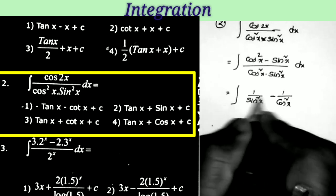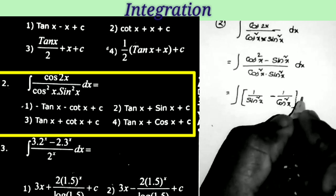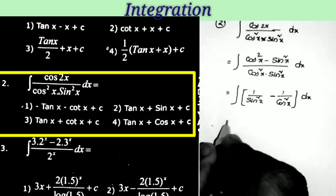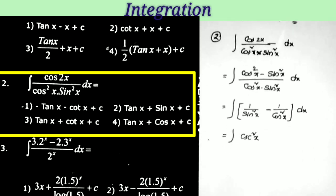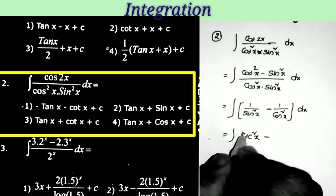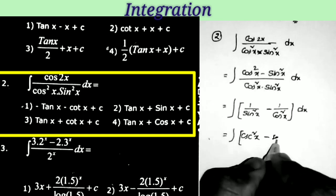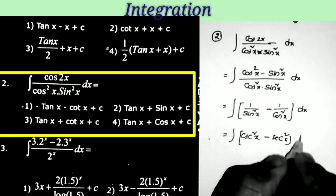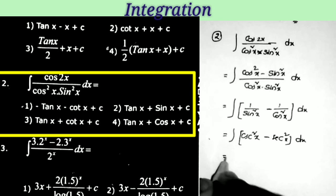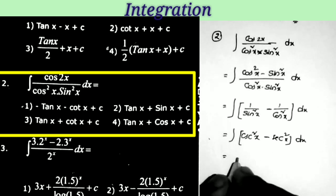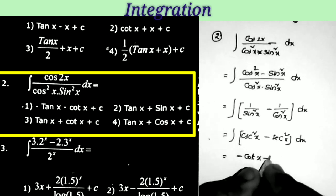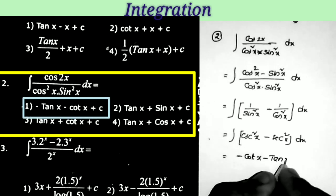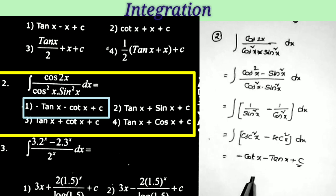Separating the denominator: 1/sin²x equals cosec²x, and 1/cos²x equals sec²x. So this equals integral of (cosec²x − sec²x) dx. Doing the integrations: integral of cosec²x equals −cot x, integral of sec²x equals tan x plus c. So the answer equals −cot x − tan x + c, which is the first option.